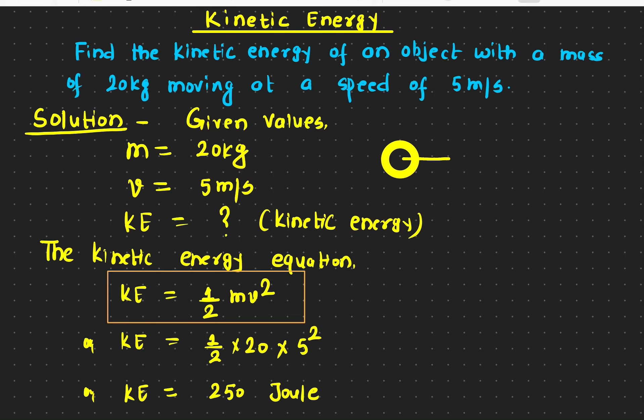If an object is moving, then it must have some kinetic energy. Let's call the object moving with a speed v and has a mass m. Then the kinetic energy of this object is given by half m v squared.